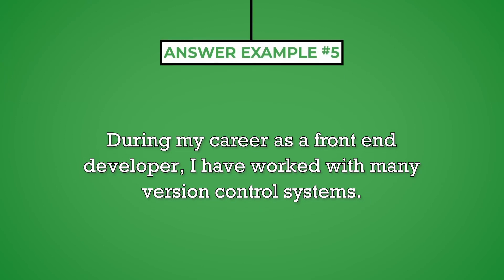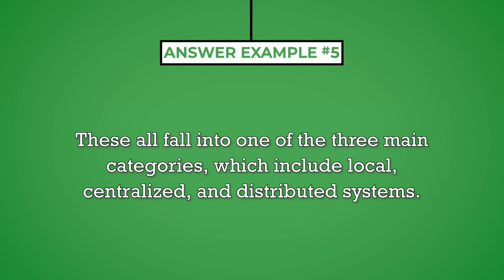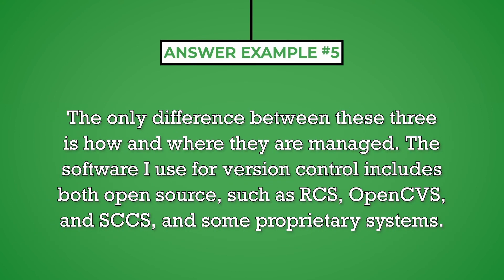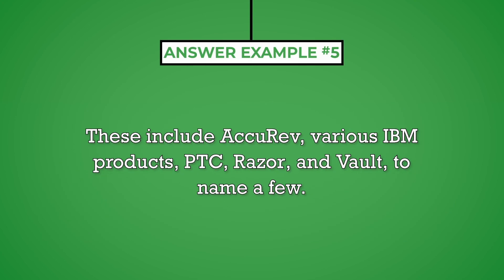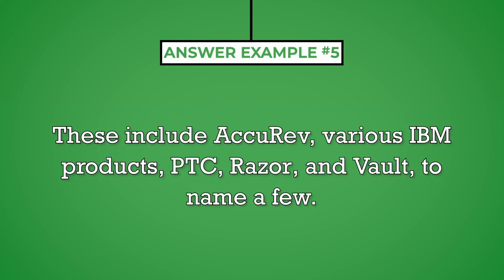During my career as a front-end developer, I've worked with many version control systems. These all fall into one of three main categories: local, centralized, and distributed systems. The only difference between these three is how and where they are managed. The software I use for version control includes open source options such as RCS, OpenCVS, and SCCS, as well as some proprietary systems including Accurev, various IBM products, PTC, Razer, and Vault, to name a few.